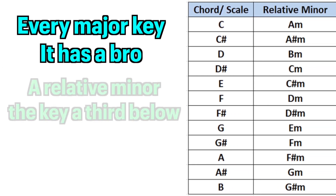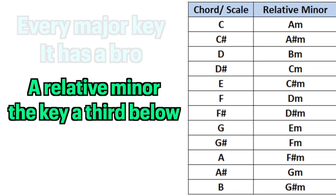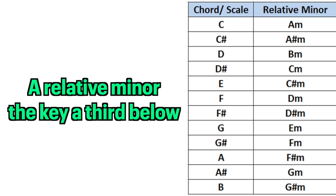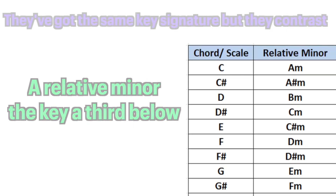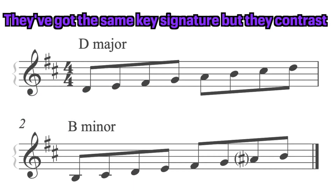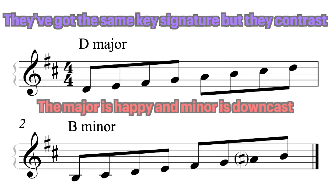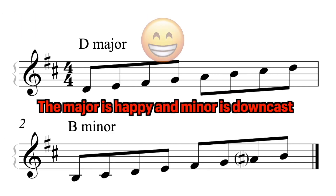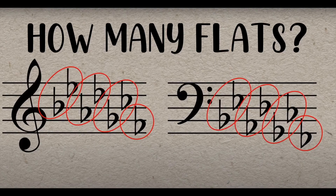Every major key has a relative minor — the key a third below. They've got the same key signature, but they contrast: the major is happy and minor is downcast.